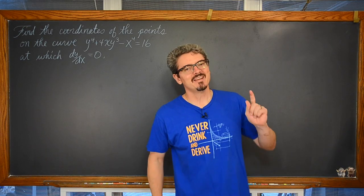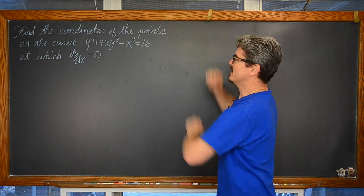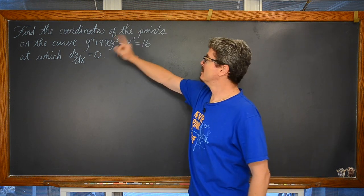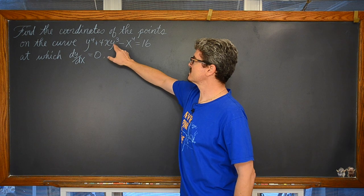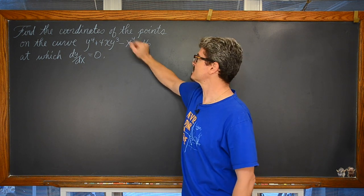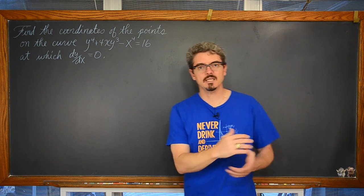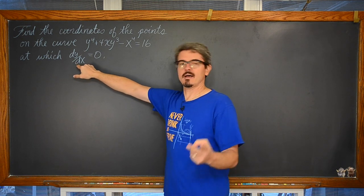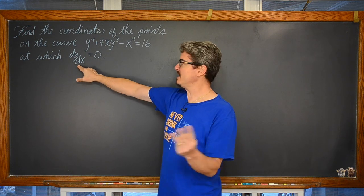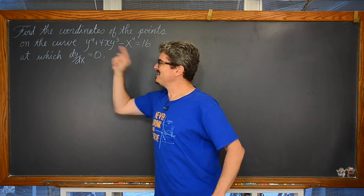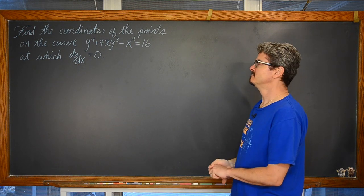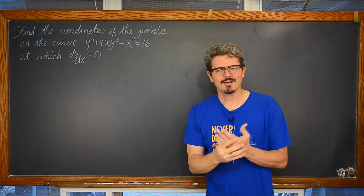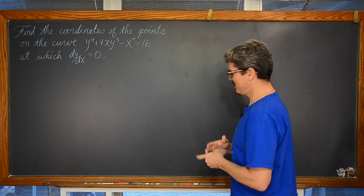Bam! Mr. Tarrou! In this video we are going to find the coordinates of the points on the curve y to the fourth power plus 4 times x times y to the third power minus x to the fourth is equal to 16, at which the derivative — the slope of the tangent line, the instantaneous rate of change — is equal to zero. What are the points of tangency such that the slope of the tangent line is equal to zero?